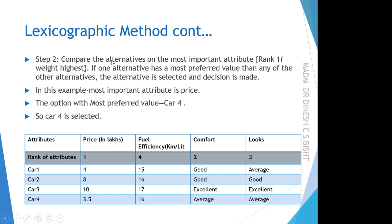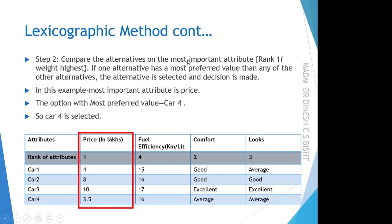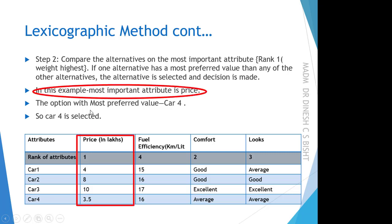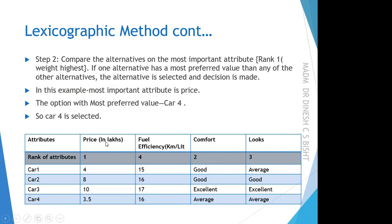In Step 2, we compare the alternatives on the most important attribute. The most important attribute means the attribute with the highest rank — rank 1. If working in terms of weights, the attribute with the highest weight is selected. In this case, we are working with ranks, so the rank 1 attribute is price. We select the price column and look for the most preferred value.